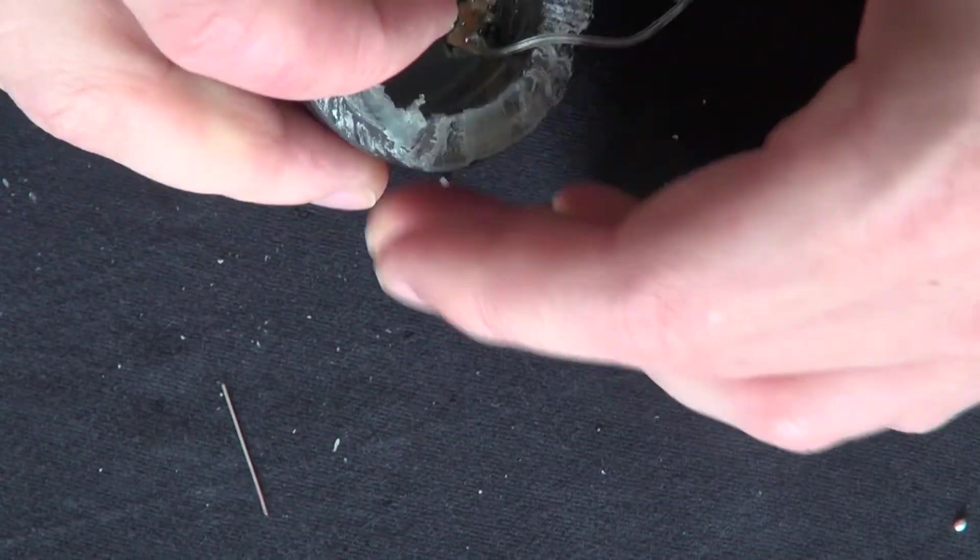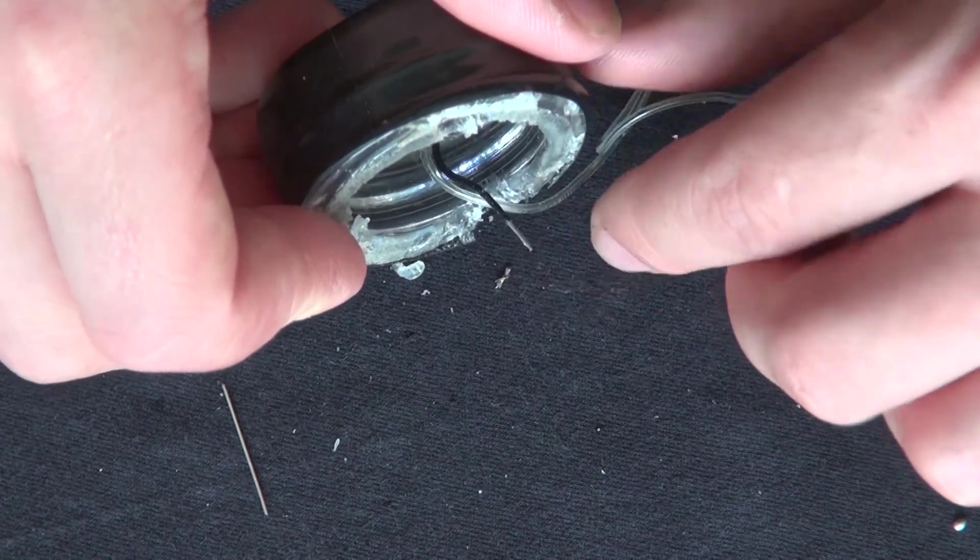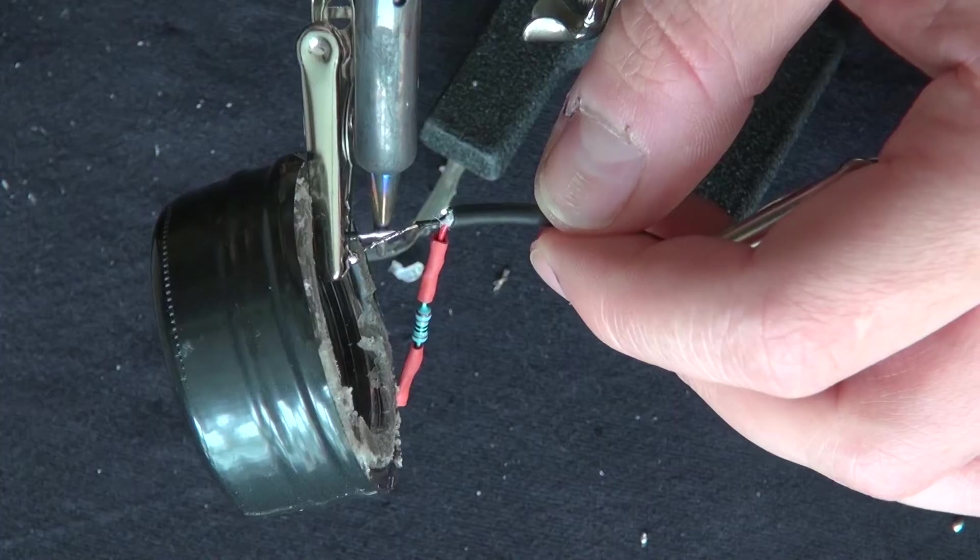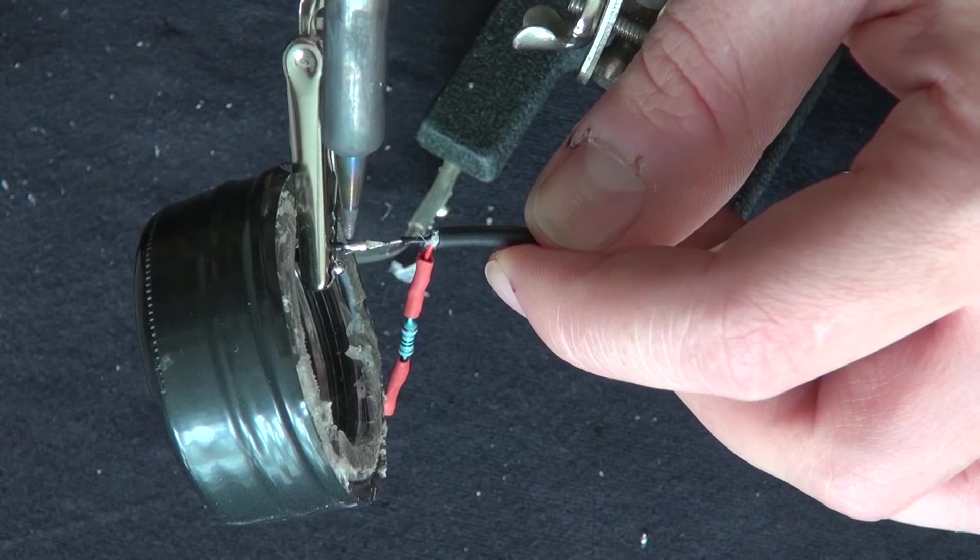Now as you can see the reason for that groove on the side is so that way I can fit my wires underneath it. Now I'm going to solder the negative wire to the negative wire that's on the switch.